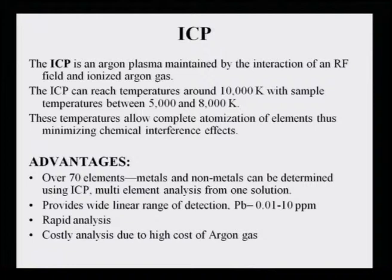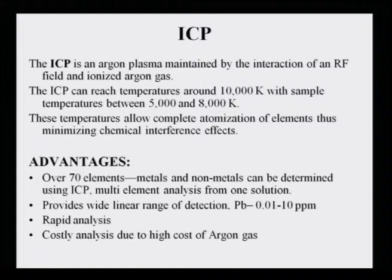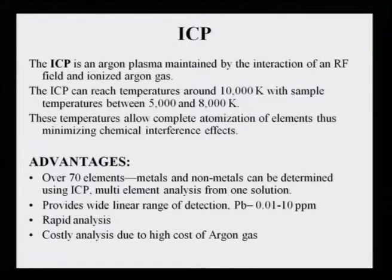The ICP is an argon plasma maintained by the interaction of the RF field and the ionization of argon gas. The ICP can reach temperatures around 10,000 Kelvin, with sample temperatures between 5,000 to 8,000 Kelvin. The flame has very high temperature and therefore ionization and excitation takes place very readily. These temperatures allow complete atomization of elements, thus minimizing any chemical interference effects.